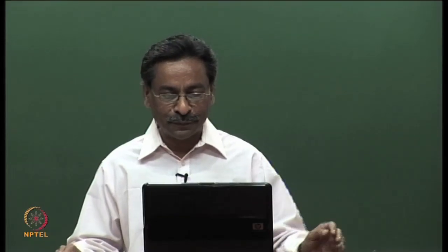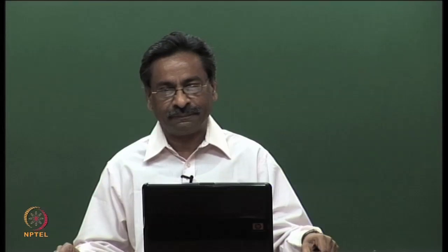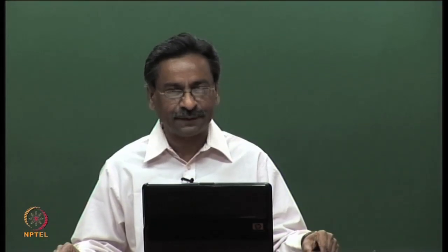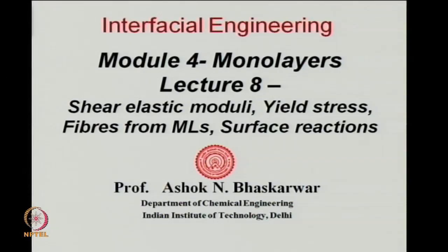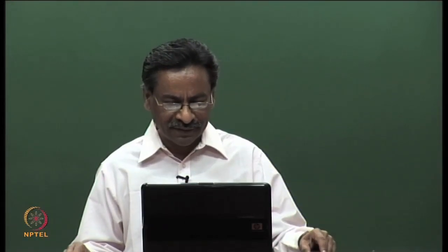In this 8th lecture in module 4 on monolayers, we look at a couple more properties of monolayers — the indices which characterize their strength related to the action of shear and with respect to when the flow can begin. We also take up the leftover topic of how fibers may be produced from monolayers, and connect it with examples in nature with a conjecture about how the primary material for living cells might have come into being. Then we move on to the generic topic of surface reactions, to which we alluded a few times earlier in passing.